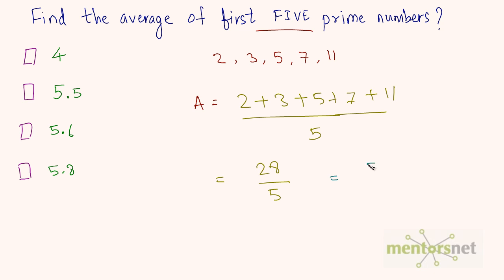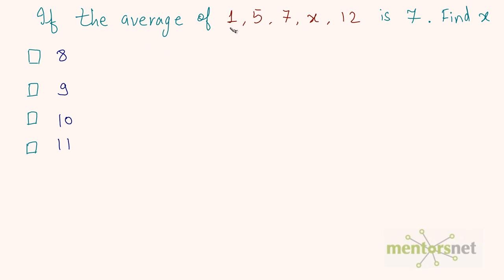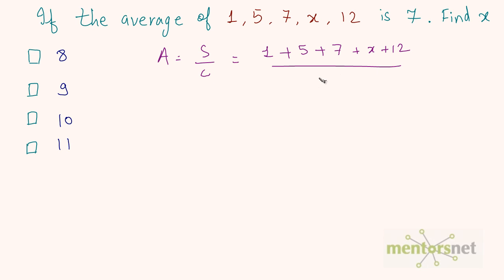28 divided by 5 is 5.6. Now a trickier question: if the average of the numbers 1, 5, 7, x, and 12 is 7, find the value of x. Using the formula average = sum / count: (1 + 5 + 7 + x + 12) / 5 = 7. There are 5 numbers and the average is given as 7.